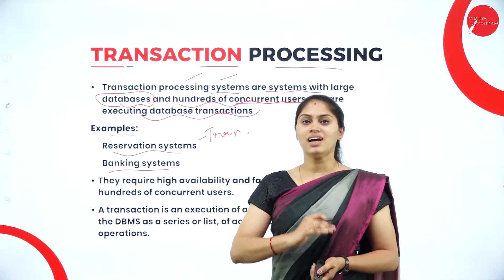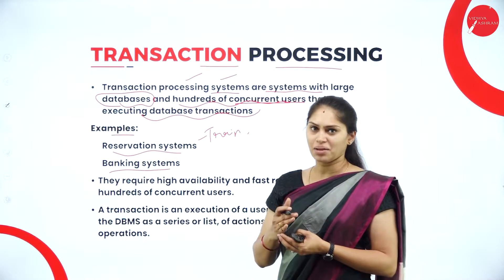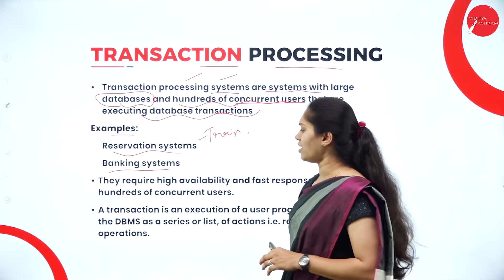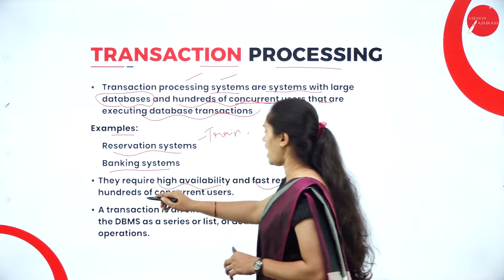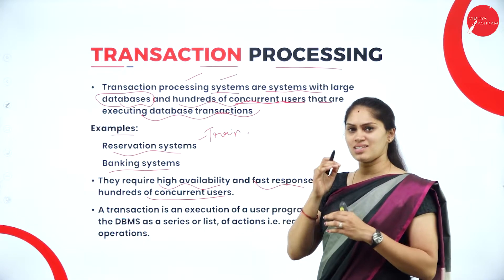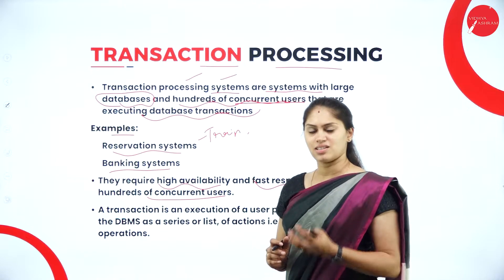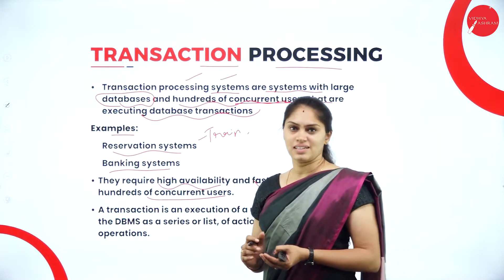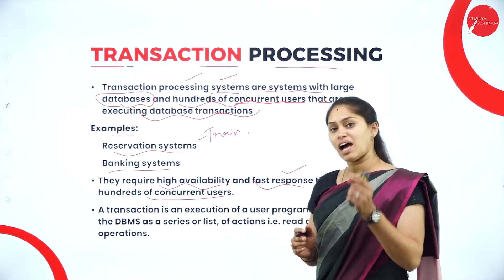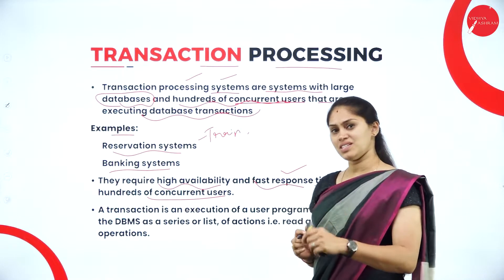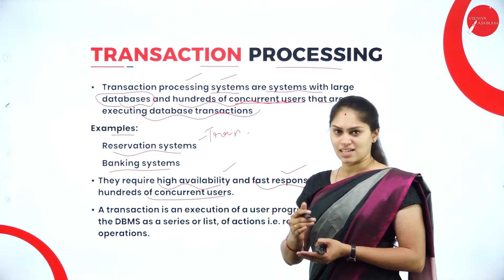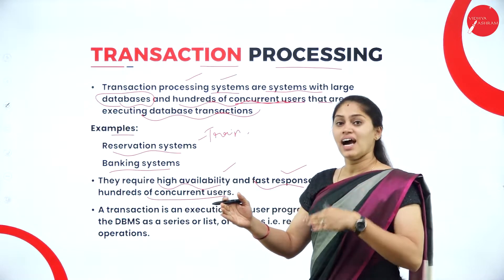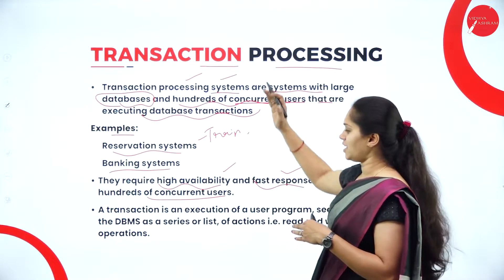A transaction processing system processes the set of serial actions taking place online. These systems require high availability and fast response time for hundreds of concurrent users. If all users are trying to access content from the database, that is concurrent usage and it needs to be very fast to return results. Less response time means high availability; high response time means low availability.